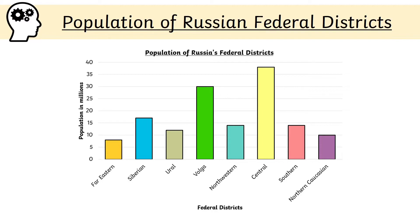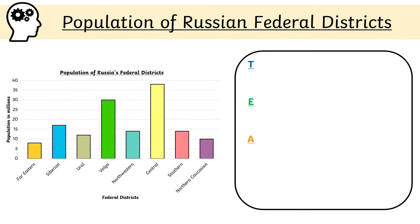This bar graph shows the population of each federal region in millions. Examine this bar graph now. We can describe what this bar graph shows using a method in geography called the TEA method. TEA stands for Trend, Example, and Anomaly.